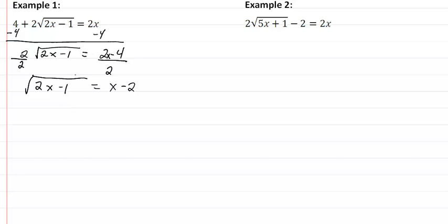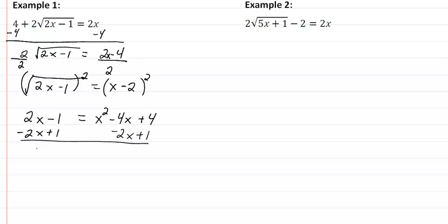We can now solve our radical by raising it to the second power. Do the same thing on the other side. And we now have 2x minus 1, equal to x squared minus 4x plus 4. Subtract 2x, add 1. So now we have 0 equal to x squared minus 6x plus 5. This can easily be factored as x minus 5, x minus 1. So we get that x will equal 5 and 1.